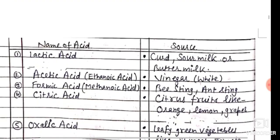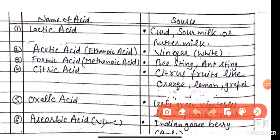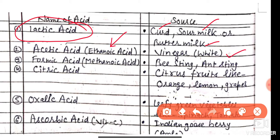See the list of some Organic acids. First is Lactic acid, found in curd, sour milk, and buttermilk. Second is Acetic acid, also known as Ethanoic acid, found in white vinegar.